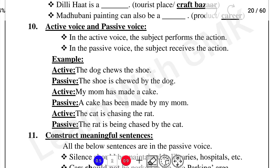Example. First, active voice: The dog chews the shoe. The dog is the subject performing the action. Passive voice: The shoe is chewed by the dog. Here 'by the dog' is added and the object becomes the subject.